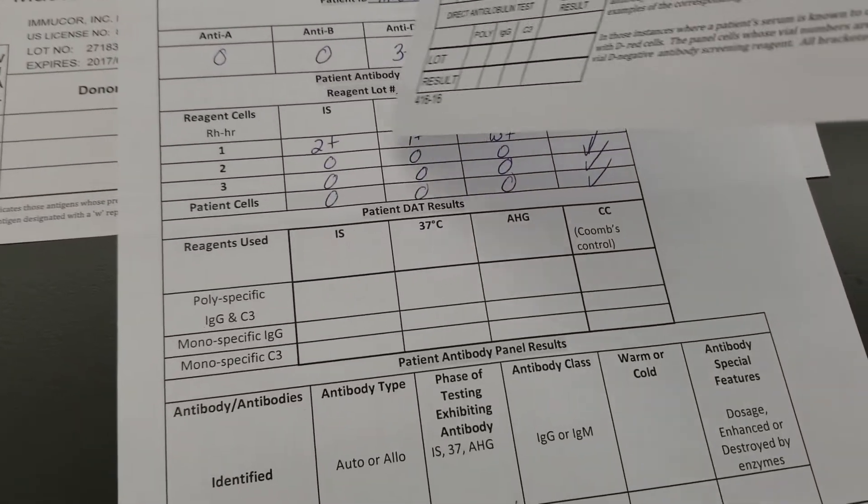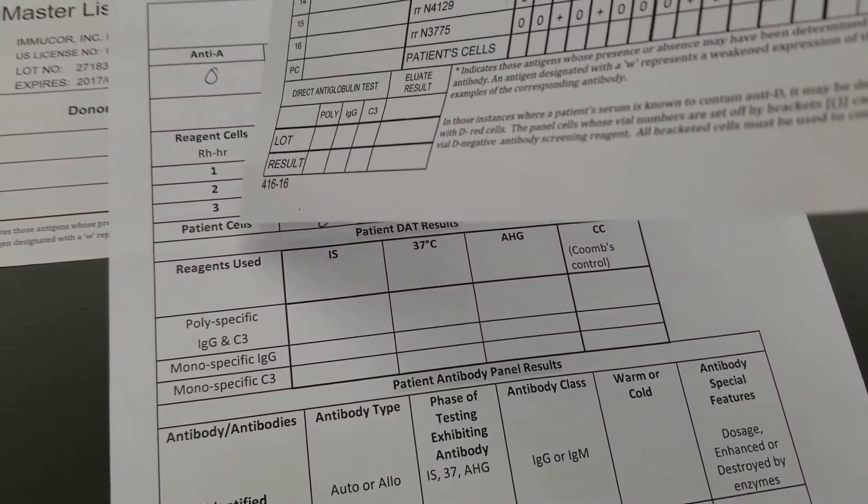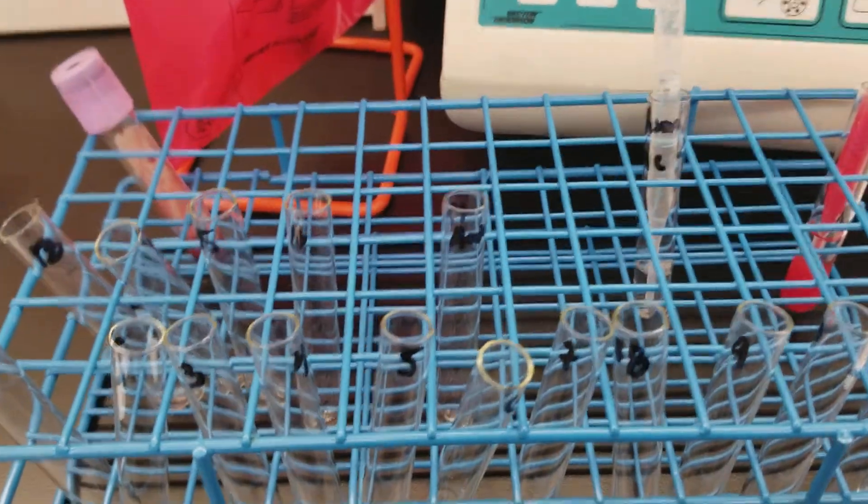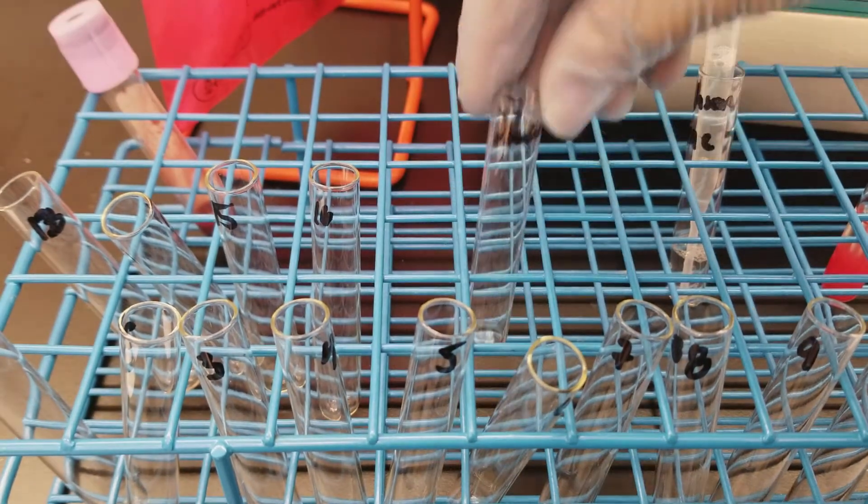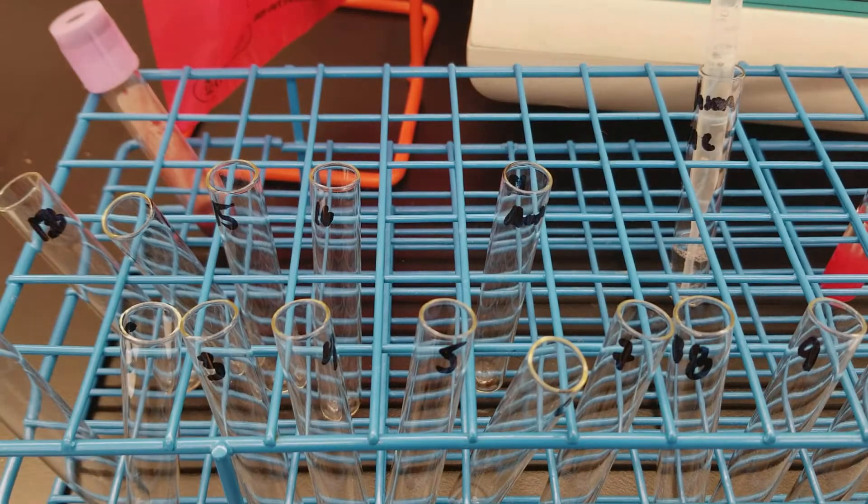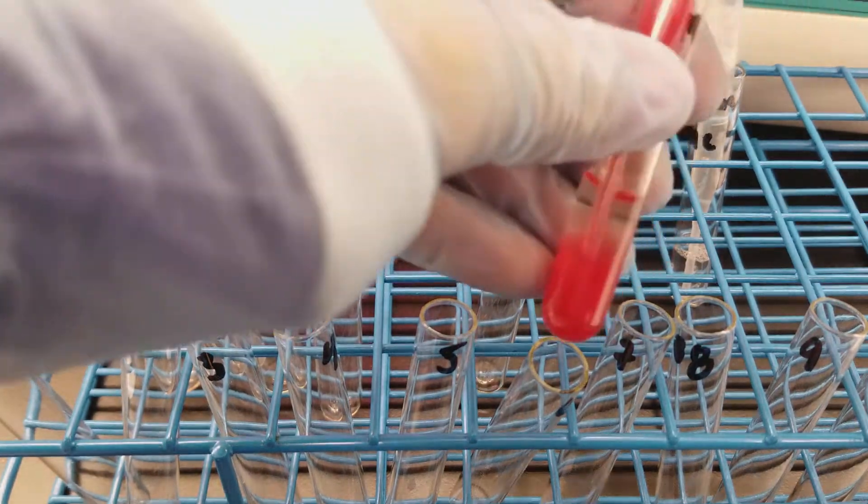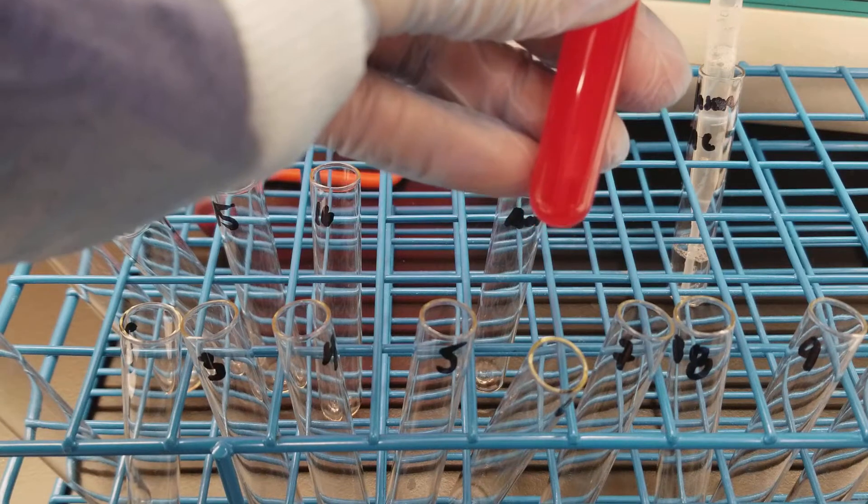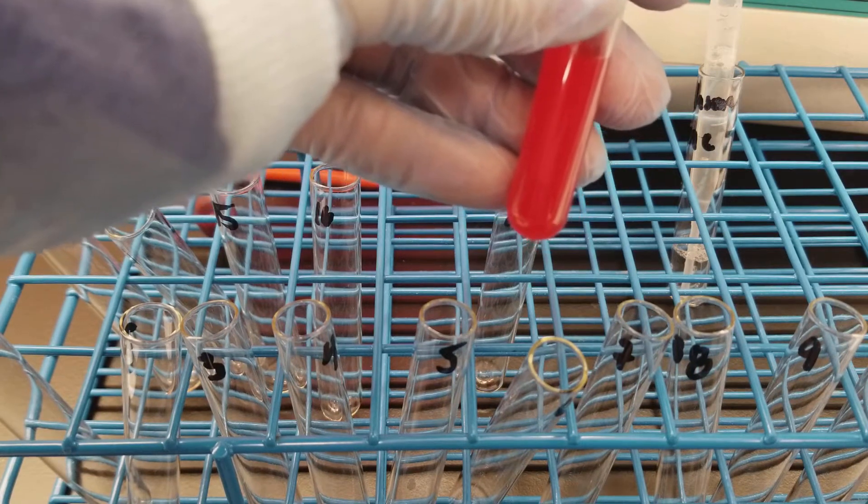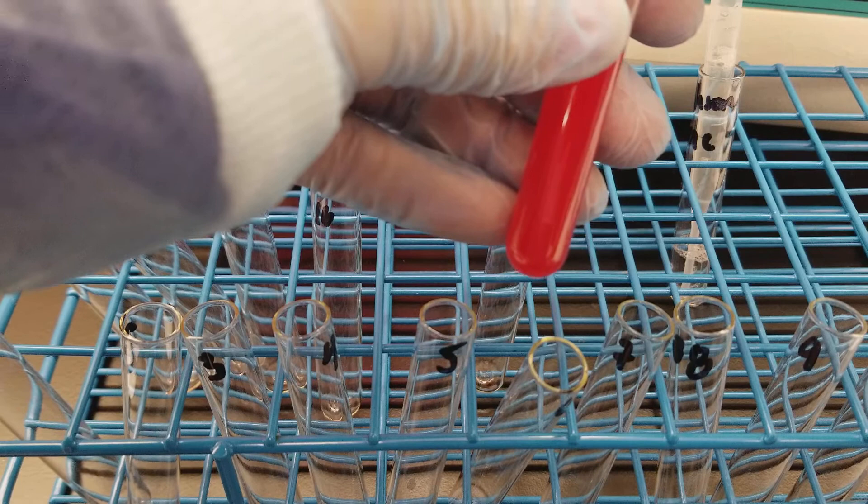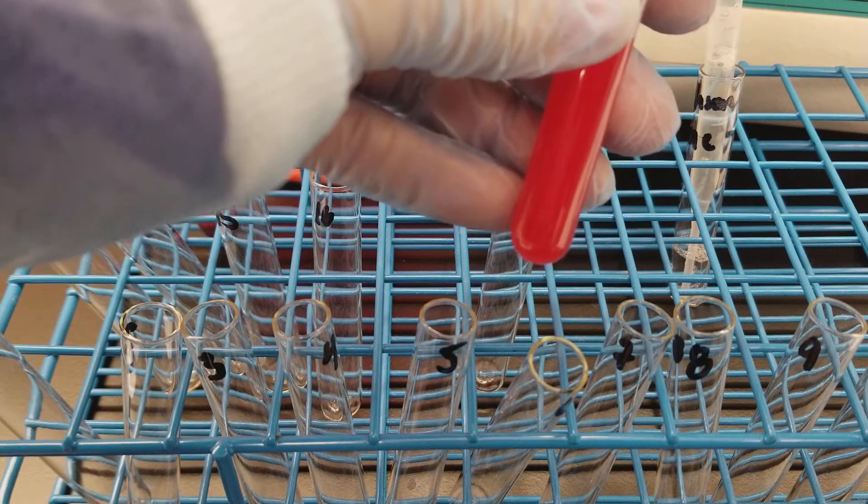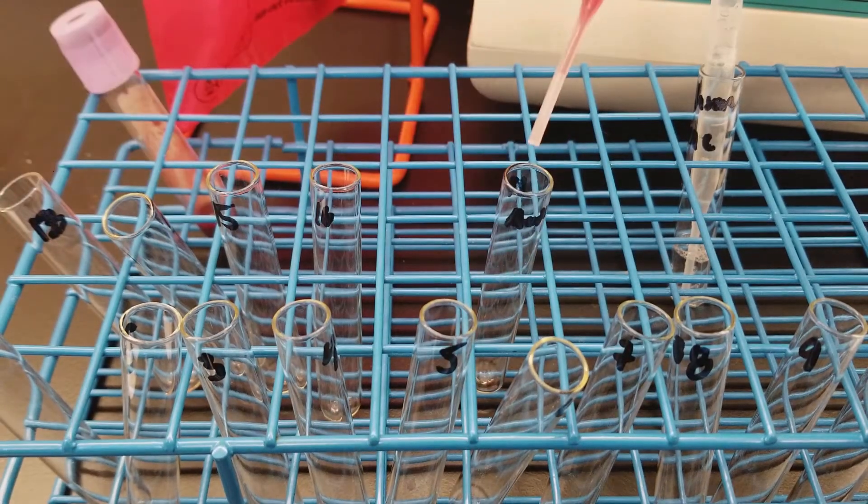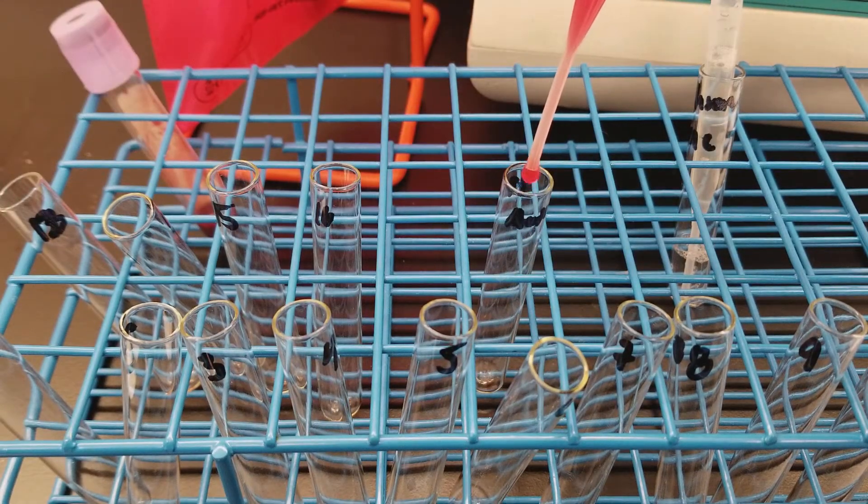All the other ones up here, the other line cells one, two, and three, are reagent cells. So we have 16 tubes and one auto control. Always make sure you put that auto control out there. I want to resuspend my three to five percent cellular suspension. I will be putting one drop of cells, whether the reagent or auto control cells, into the tubes appropriately. This is the auto control, so we're going to get one there.